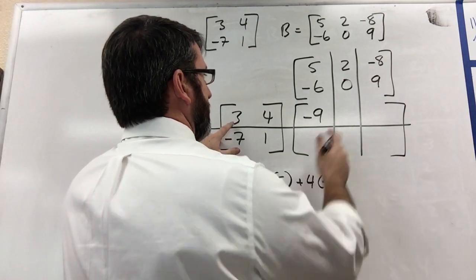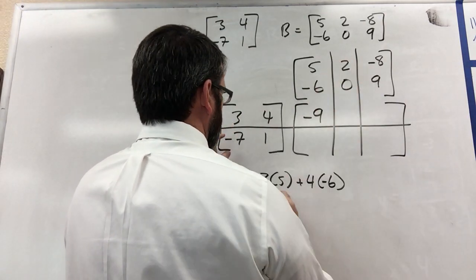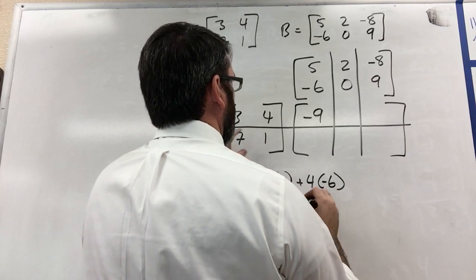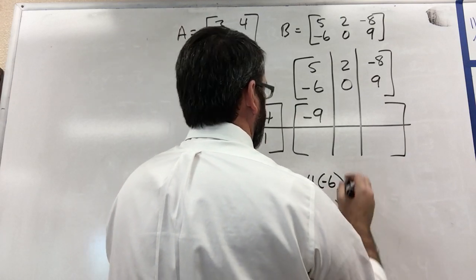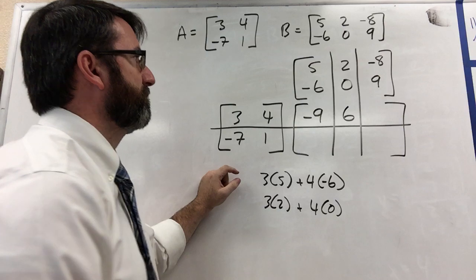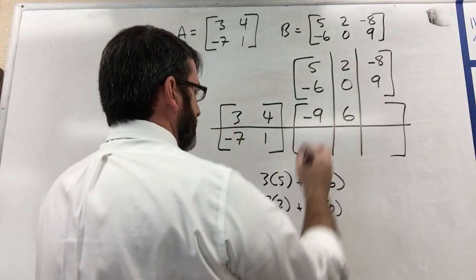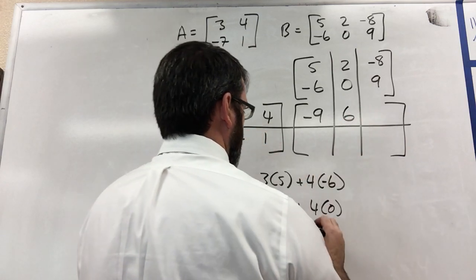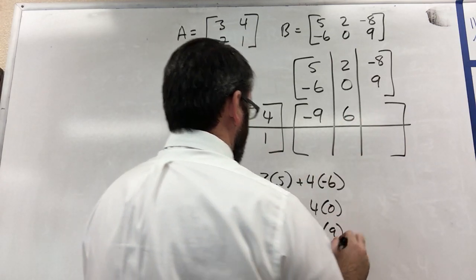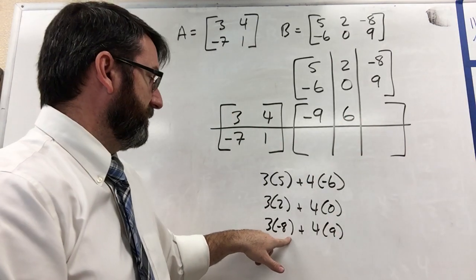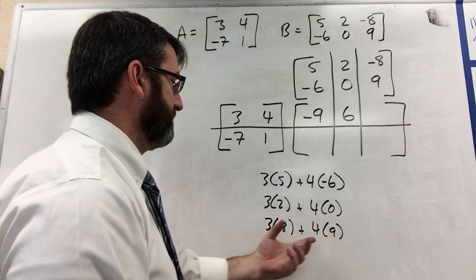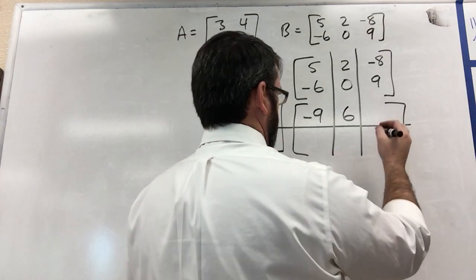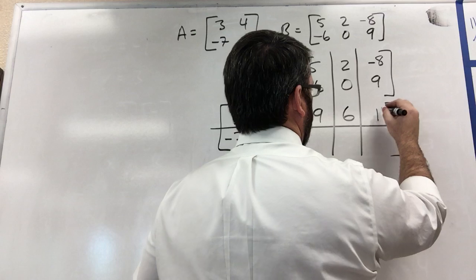All right, and then for this entry, it's 3 times 2 plus 4 times 0, which is going to be 6. And then for this entry, 3 times negative 8 plus 4 times 9. 3 times negative 8 is negative 24, 4 times 9 is positive 36, so this is going to be 12.